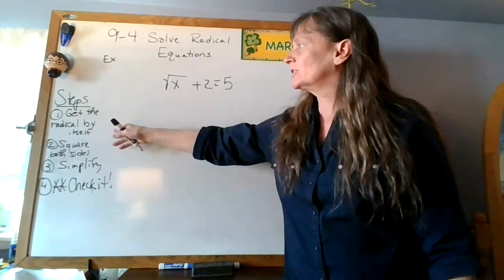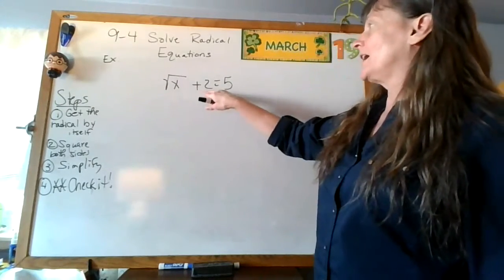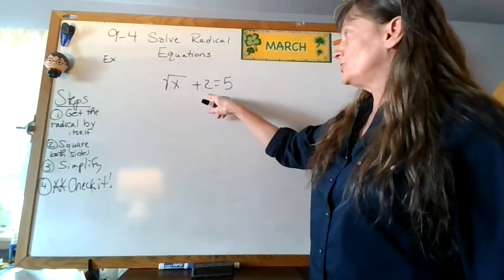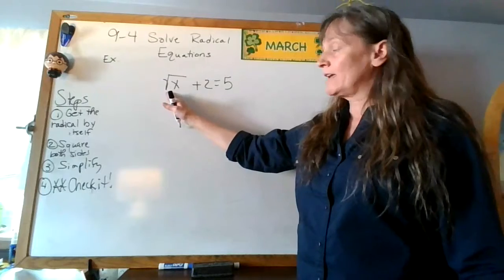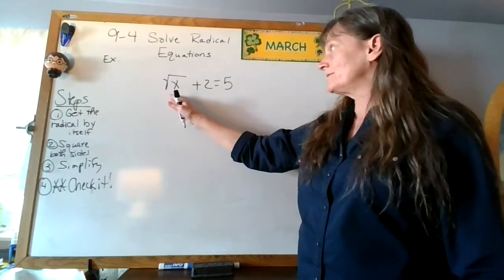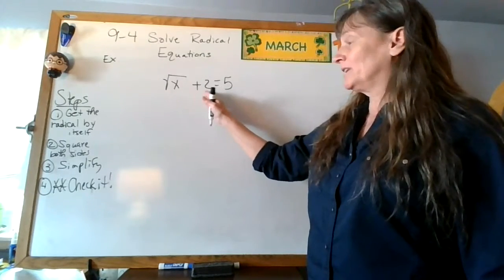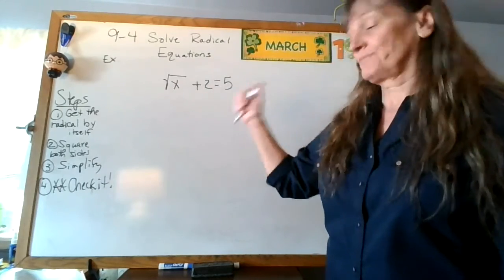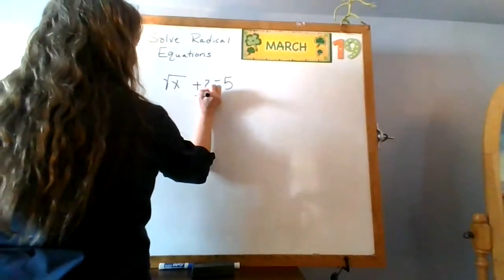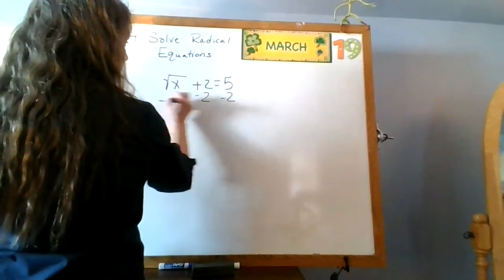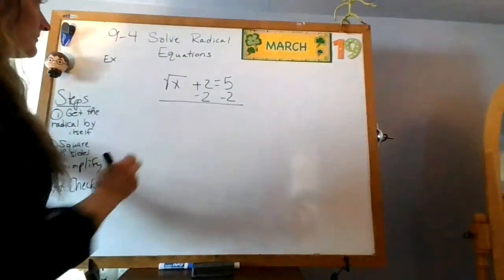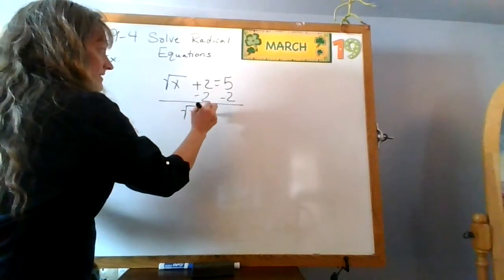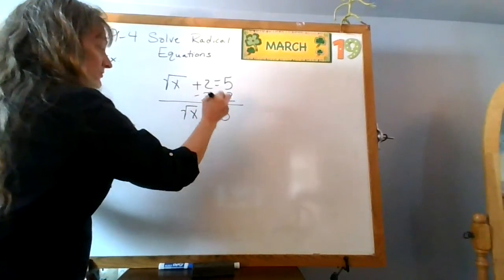Get the radical by itself. I look at square root of x plus two equals five. I locate my square root — it's on the left side. I have plus two with it, so how do I get rid of plus two? Correct — minus two on both sides. Those cancel out, so I have the square root of x on this side, equals five minus two, which is three.